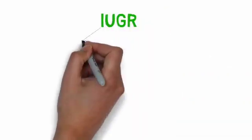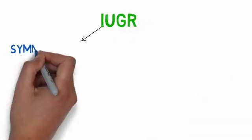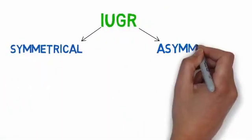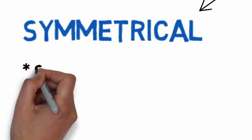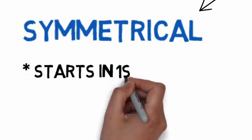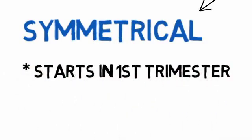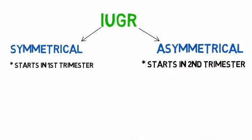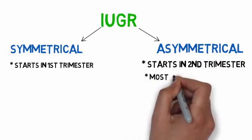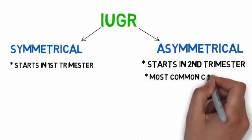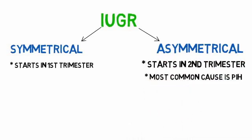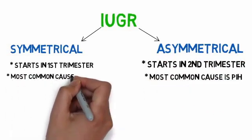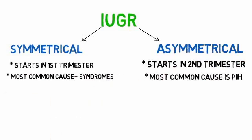IUGR is divided into symmetrical IUGR and asymmetrical IUGR. Symmetrical starts in the first trimester, whereas asymmetrical starts in the second trimester. The most common cause of asymmetrical IUGR is gestational hypertension, while the most common cause of symmetrical IUGR are syndromes.